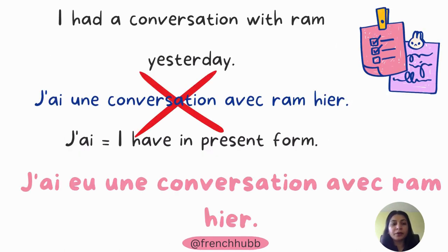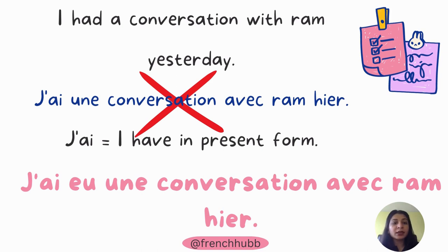Now let's see where we make mistakes. For example, 'I had a conversation with Ram yesterday.' What we generally do is write 'j'ai une conversation avec Ram' — using the present form of avoir — because we think that since we are already conjugating with avoir, there is no need to add the past participle. But that is wrong.